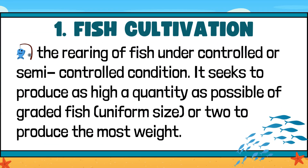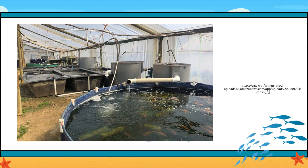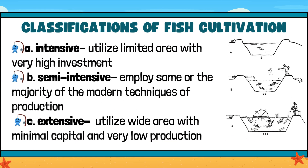Fish Cultivation is the rearing of fish under controlled or semi-controlled conditions. It seeks to produce as high a quantity as possible of graded fish of uniform size, or to produce the most weight. Classifications of fish cultivation: A. Intensive — utilizes limited area with very high investment. B. Extensive — utilizes wide area with minimal capital and very low production. C. Semi-intensive — employs some or the majority of the modern techniques of production.